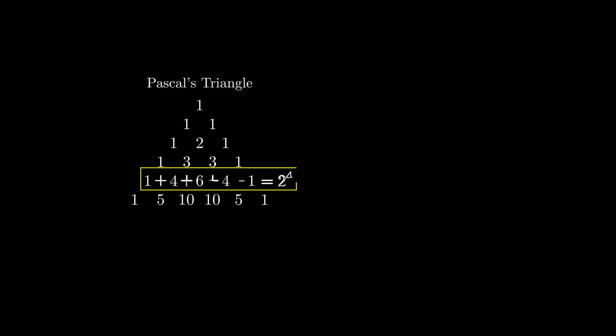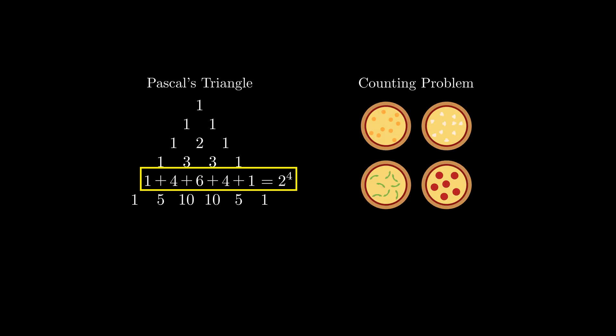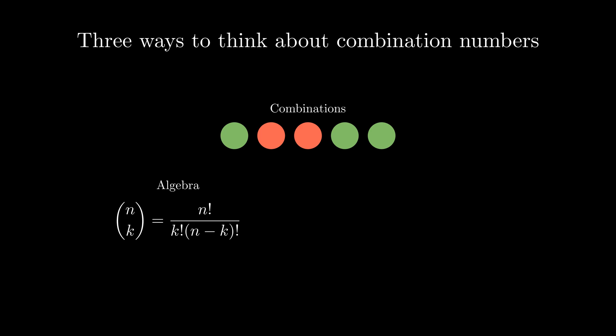So what did we learn? As promised, we found one pattern within Pascal's triangle, related it to counting, and proved it. In the process, we learned to understand combination numbers in three ways: combinatorially, by treating them as the number of ways to choose k objects out of n; algebraically, by plugging in the formula; and what I will call iteratively or recursively, by visualizing their relationships on Pascal's triangle. Whenever you're tackling a combinatorics counting problem, remember these three general ways to visualize your counting numbers. What may be difficult under one perspective could be much easier under another.